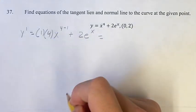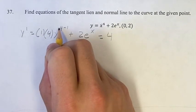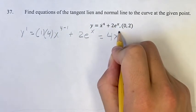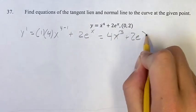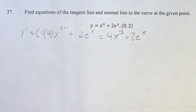So simplifying this a little bit, 1 times 4 is 4, x to the 4 minus 1 is x to the 3rd power, plus 2e^x, don't have to mess with that. So this is the general form of the derivative.